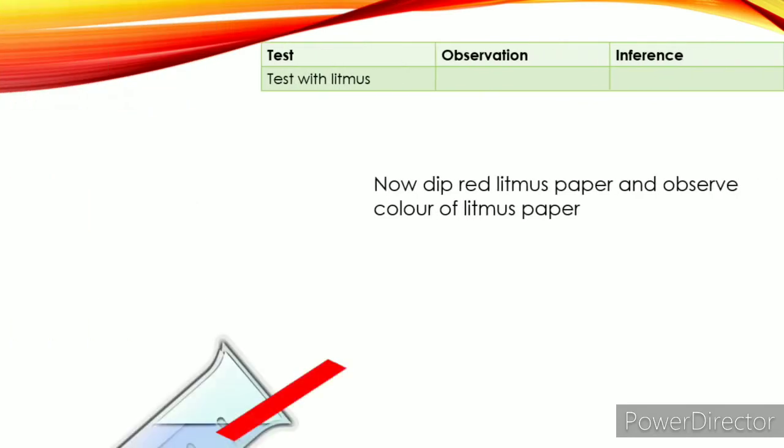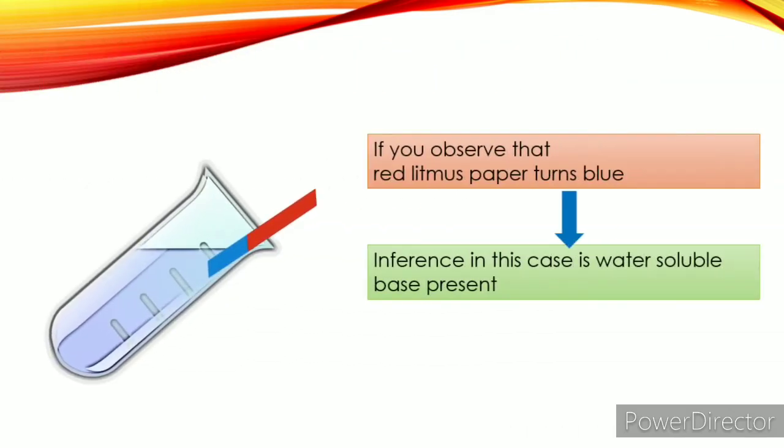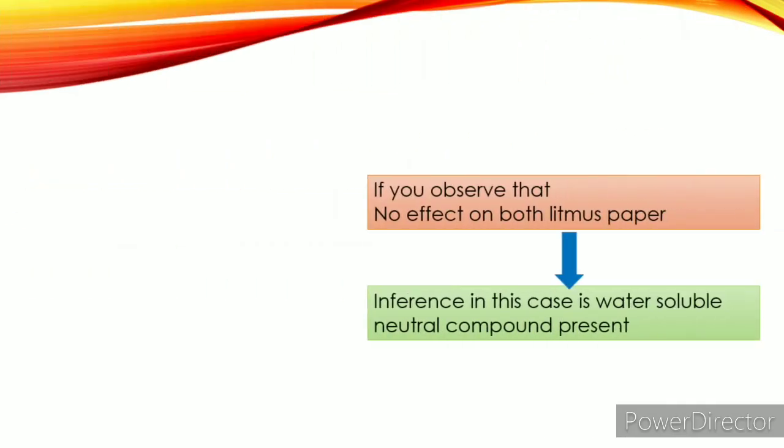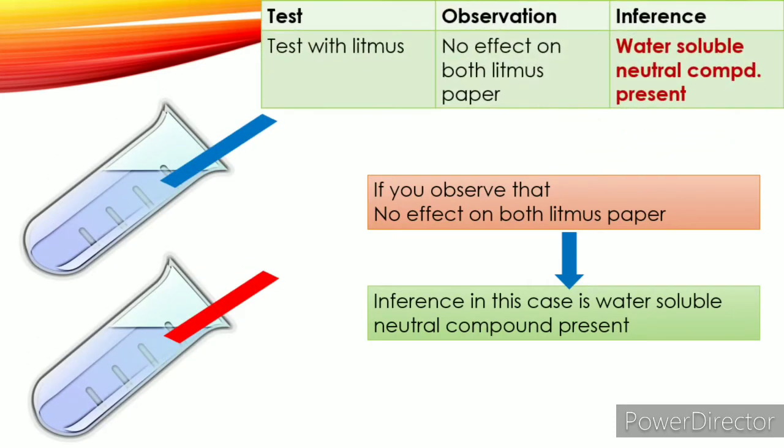Now dip red litmus paper and observe color of litmus paper. If red litmus paper turns blue, you will say that your substance is water soluble base. But then another possibility is that there is no effect on both litmus paper. So in this case, our conclusion is water soluble neutral compound present.